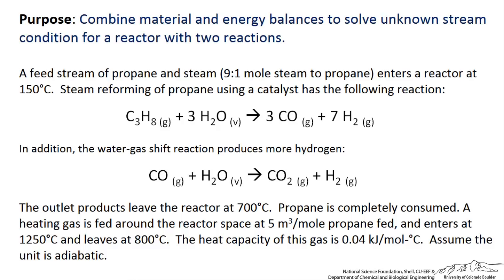In this screencast we are going to work through an example problem that involves determining the composition exiting a reactor. This will tie together both material and energy balances for a reactor involving two reactions occurring simultaneously. A good industrial example of this is the steam reforming of propane to produce hydrogen gas.